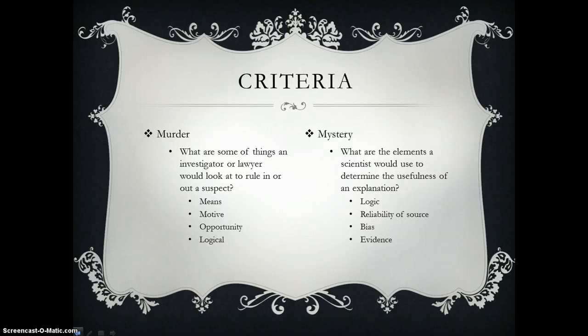In the mystery, you're looking at what are the elements a scientist would use to determine the usefulness of an explanation in terms of is it logical? Is there a reliable source or several reliable sources? Is there some bias from the different people who are proposing theories? And then what's the evidence? What backs up these different theories?